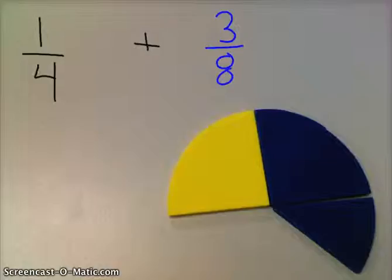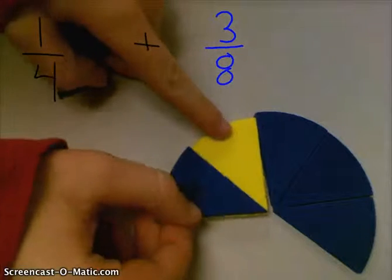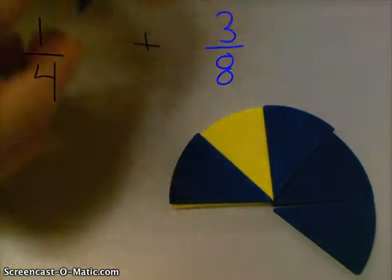We are going to change one-fourth into two-eighths. So we're going to add what size pieces together? The three-eighths pieces. Okay, so we're going to change the one-fourth piece into two-eighths because we're going to add eighths together because those are the same size piece.